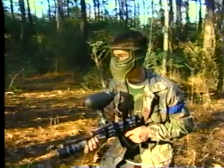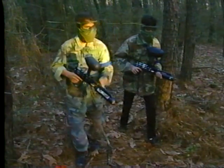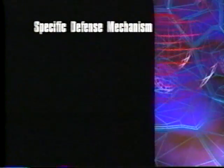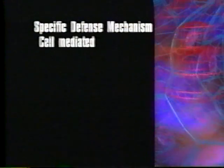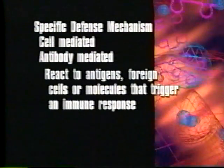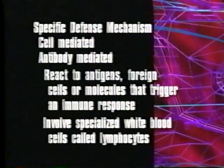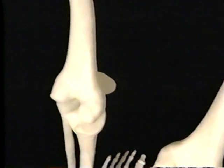The immune response is programmed to attack and destroy any cell or large molecule that doesn't have the correct identifiers. Molecules or cells that trigger an immune response are called antigens. The specific defense mechanism has two methods of attack: the cell-mediated and antibody-mediated responses. Both react to antigens, which are foreign cells or molecules that trigger an immune response. Both types of immune responses involve specialized white blood cells called lymphocytes. All of your lymphocytes originate from stem cells in the bone marrow.